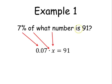And then we have 'is.' Is in math means equals. 2 plus 2 is 4. 7% of what number is - 91 is the equal sign. And then the 91 is just 91. It's already a number. You can put that into an equation just as it is.